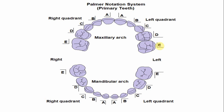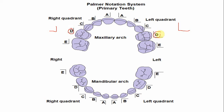In the Palmer notation system, the alphabets begin from the midline. For both the right and left sides, the alphabets are the same — the only difference is the quadrant symbol. This symbol is used for the maxillary right quadrant, and this symbol for the maxillary left quadrant. So the alphabet for the right maxillary first deciduous molar is D, and for the left maxillary first deciduous molar it is also D.